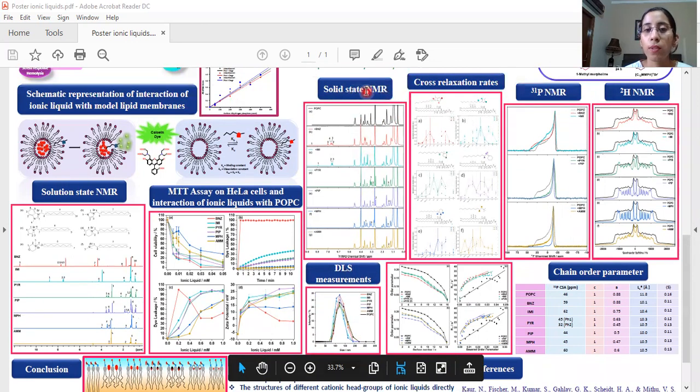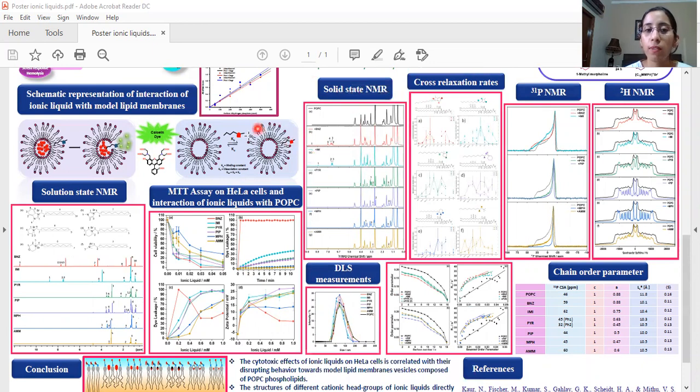Finally the solid state NMR to see the location of these ionic liquids within the lipid bilayer. The cross relaxation rates were determined using the 1H-1H NOESY NMR spectra where it was found that the cationic head group of ionic liquids stayed on the lipid water interface and the alkyl chain the hydrophobic dodecyl chain is buried into the hydrophobic region of the vesicles.